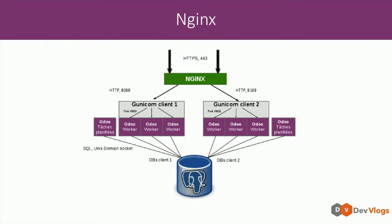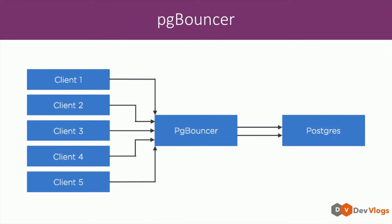The next is pg_bouncer, which is similar to nginx. The difference is that nginx handles web requests while pg_bouncer handles postgres requests sent from the Udo server. You can have multiple clients requesting the same DB connection and it will handle those requests so that the number of open connections doesn't pile up, reducing the load on the postgres server.